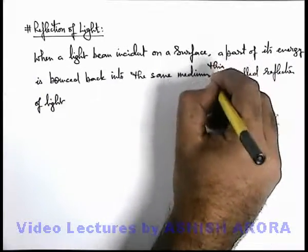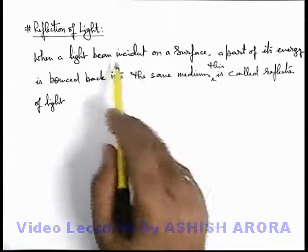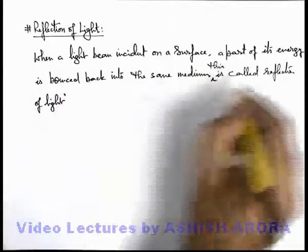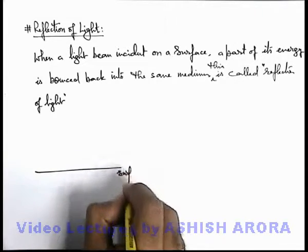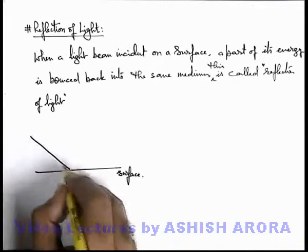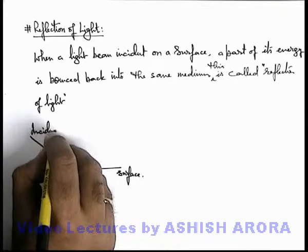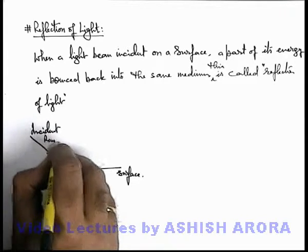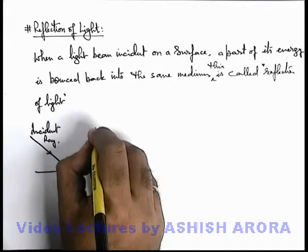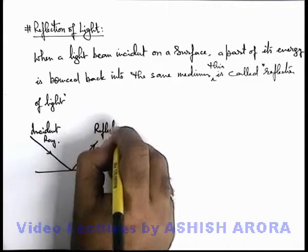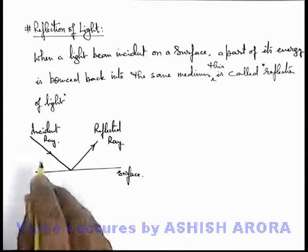This is the phenomenon by which a part of light energy of the beam is bounced back in the same medium, called reflection of light. Here we can see: if this is a surface on which a light ray is incident — termed as the incident ray — then a part of this incident ray bounces back into the same medium, which we call the reflected ray. This is the phenomenon we call light reflection.